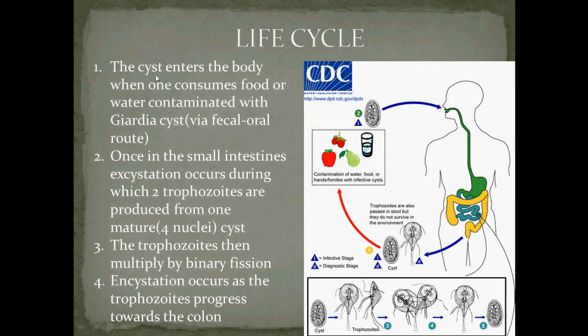Life cycle: The cyst enters the body when one consumes food or water contaminated with Giardia cysts — this is through the fecal-oral route. Once in the small intestine, excystation occurs, during which two trophozoids are produced from one mature cyst, which, as we know, contains four nuclei.